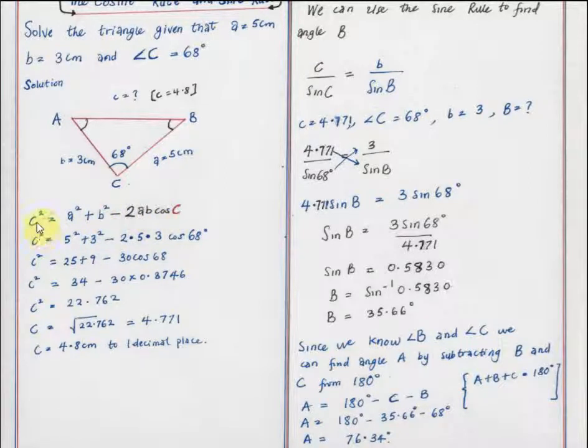If you're looking for side A, it's going to be A² equals B² plus C² minus 2BC cos A. So depending on the side you're looking for, the cosine rule can change.